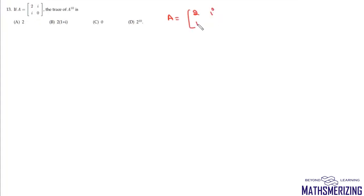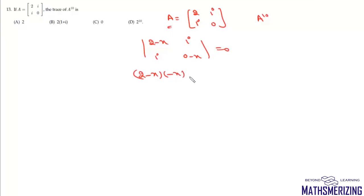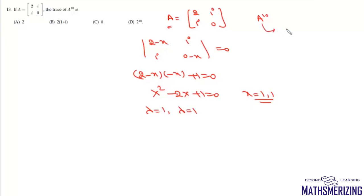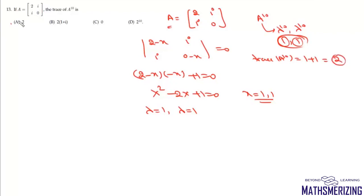Question 13: given matrix A = [[2, i],[i, 0]], find trace of A^10. First find eigenvalues: det(A − xI) = (2−x)(−x) − (i)(i) = x² − 2x + 1 = 0, giving eigenvalues 1 and 1. Eigenvalues of A^10 are 1^10 = 1 and 1^10 = 1. So trace(A^10) = 1 + 1 = 2. That's option A.